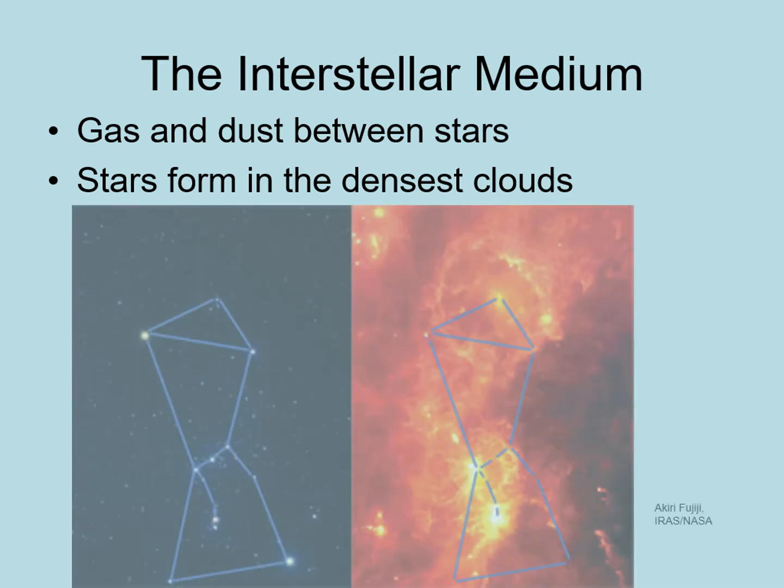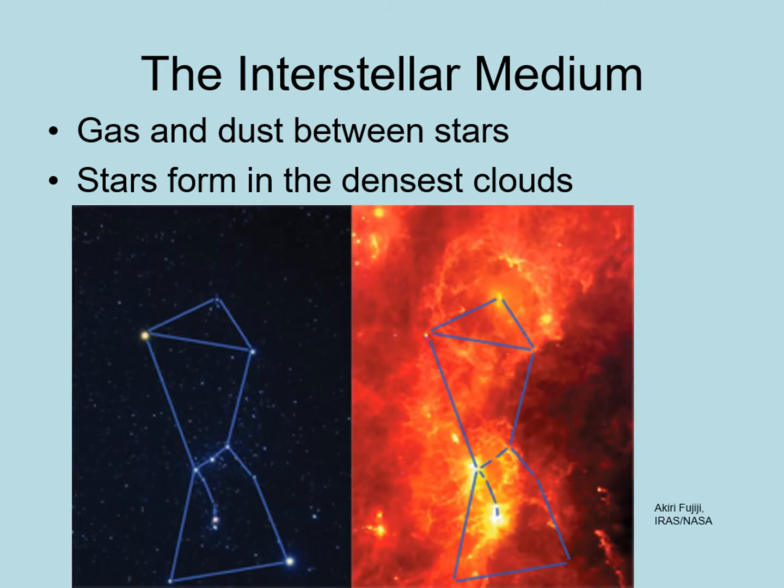One of the largest nearby star-forming regions is in the constellation Orion. On the left you can see a visible light picture of this part of the sky, and on the right the same region viewed in infrared light. The glow is caused by warm dust in this giant star factory — there are around a million stars forming in Orion right now.